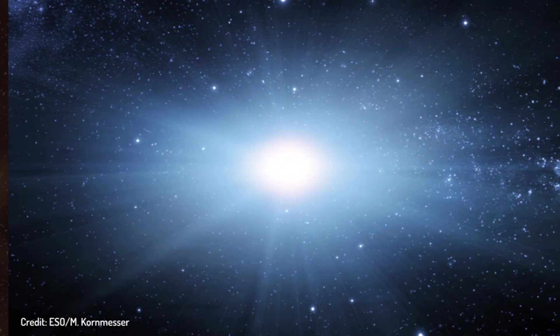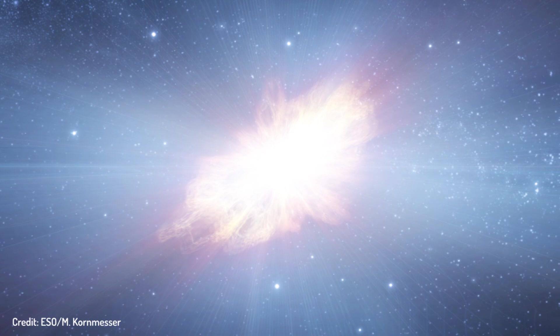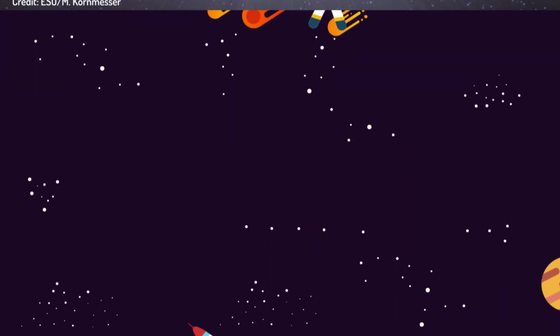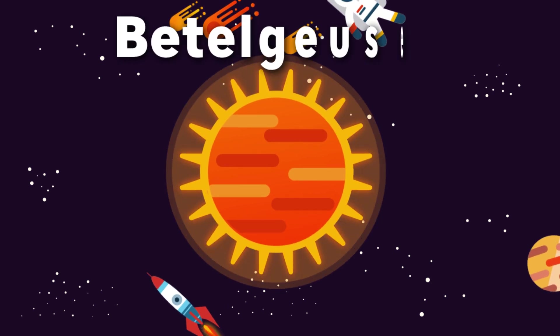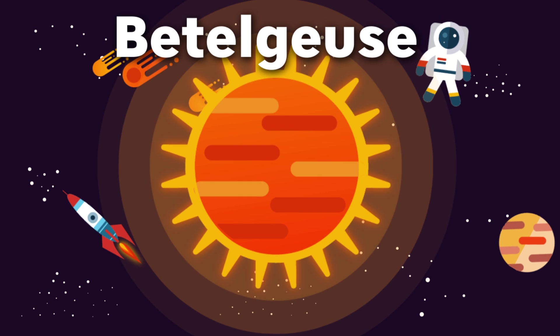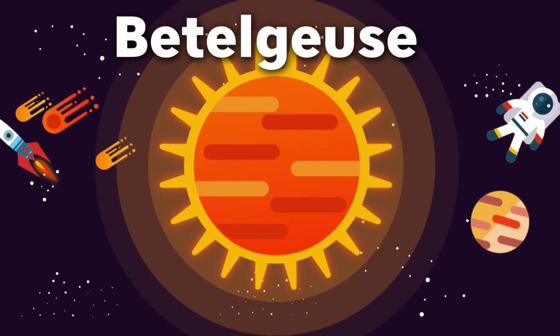And then there is type 2 supernova. This is when a star several times more massive than the sun runs out of nuclear fuel and collapses under its own gravity until it explodes creating a beautiful yet deadly spectacle to observers. Betelgeuse is a red supergiant and red supergiants live fast and die young, exhausting its supply of hydrogen fuel in just under 10 million years, creating type 2 supernova explosion.